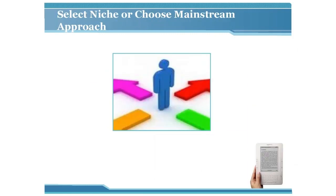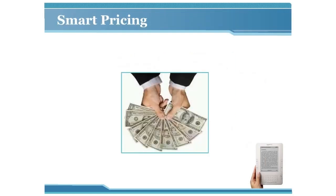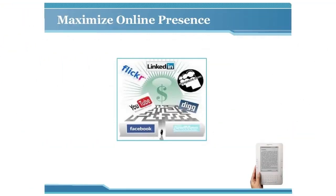Select a niche or choose a mainstream approach. As a writer, you'll have to pick topics which are mainstream or niche-based — the difference is enough to dictate whether you will enjoy success or suffer failure. In general, writing for niche topics is more profitable due to less competition and more trust and credibility as an expert writer. Smart pricing: pricing has a lot to do with the success of a product — for ebooks it's best to stay on the low to average scale to keep attracting buyers through higher volumes.